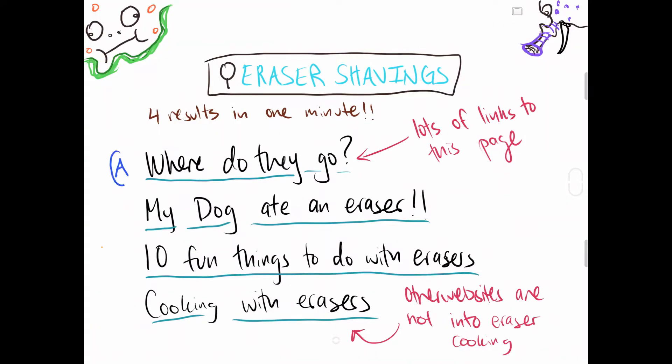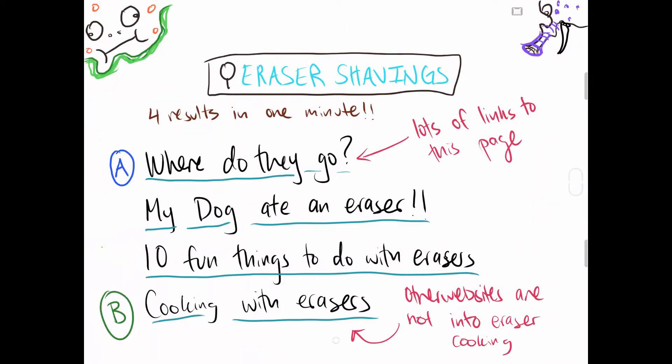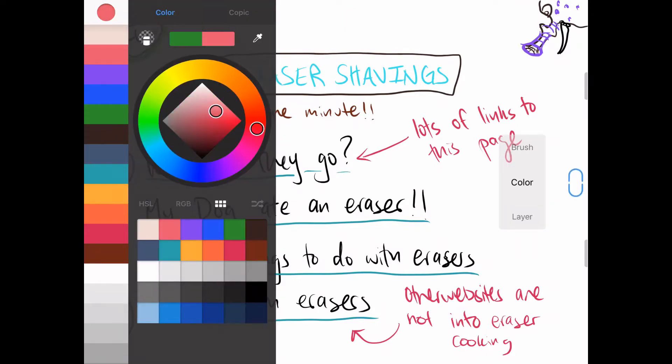Cooking with erasers probably shows up in very few places, and so the PageRank algorithm would give it fewer results. And it would work like this for all possible results, for all possible possibilities. And so then each one would be given an A, a B, a C, a D, so on and so forth. And you'll see later on in our example why we chose these particular letters in these particular spots.